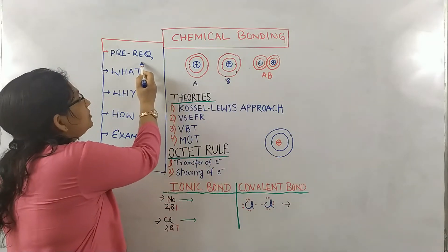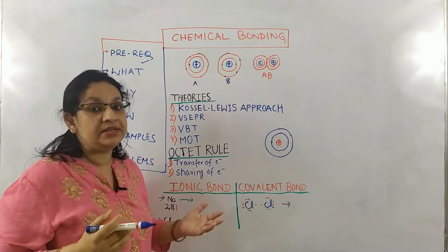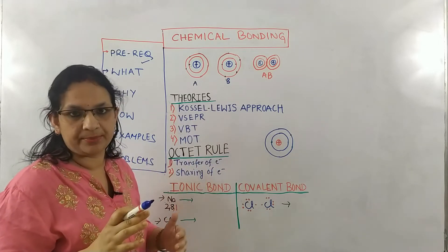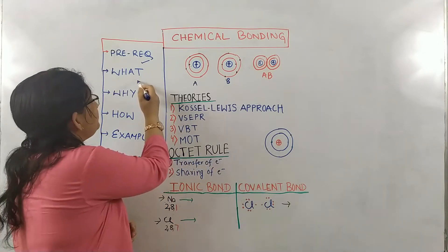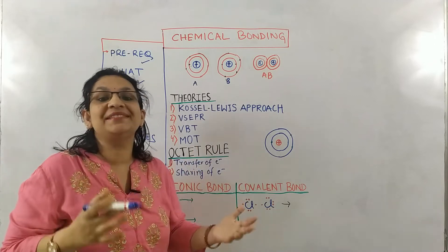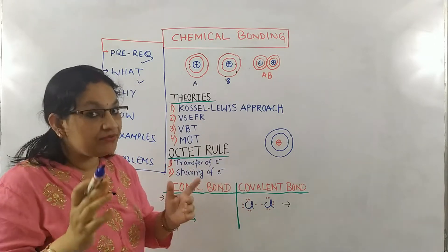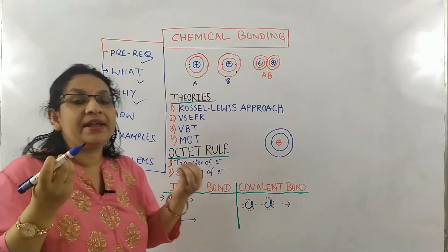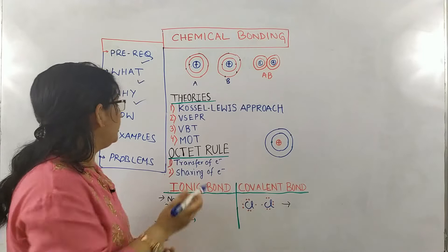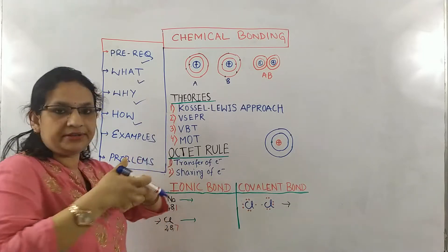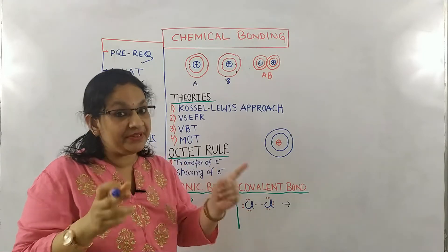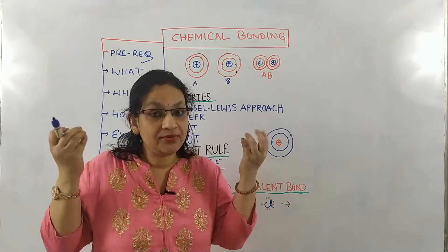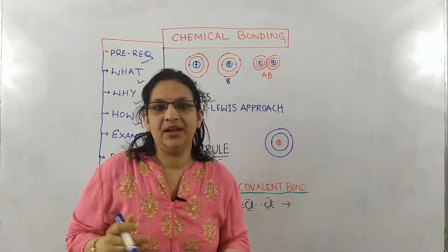First of all we will go through prerequisites — what are the things you need to know before starting this chapter. Then we will read what, that means what is chemical bonding. And after knowing what, we will move to why — why is chemical bonding in nature? Then how — how are these bonds formed? And we will see that through some examples, and then we will solve a couple of problems.